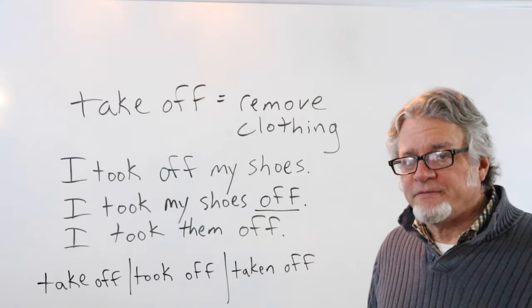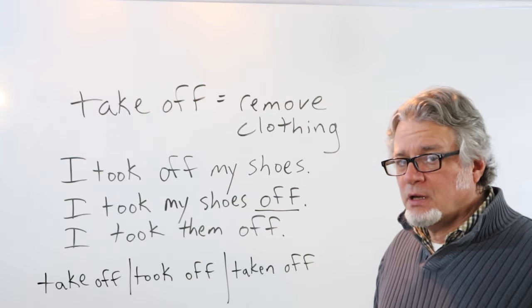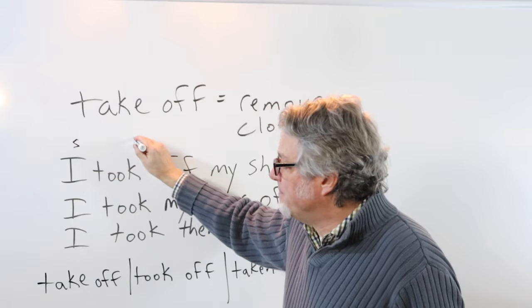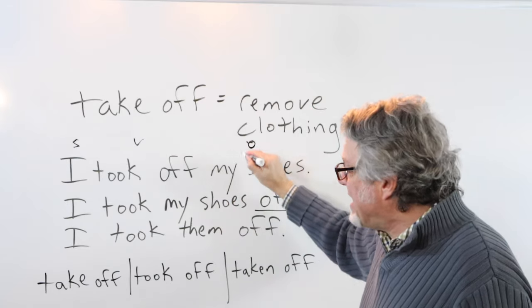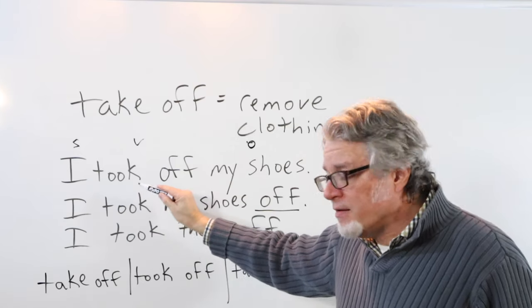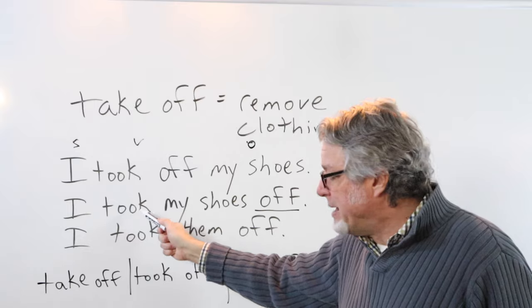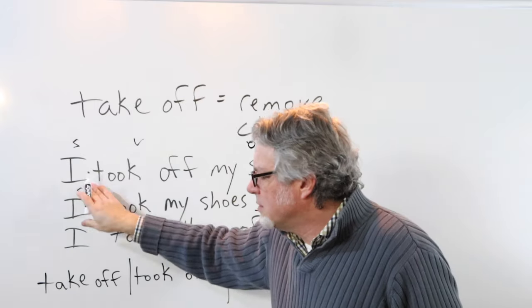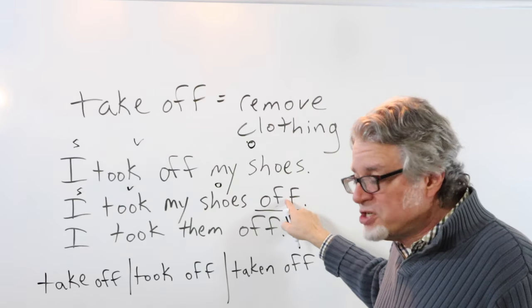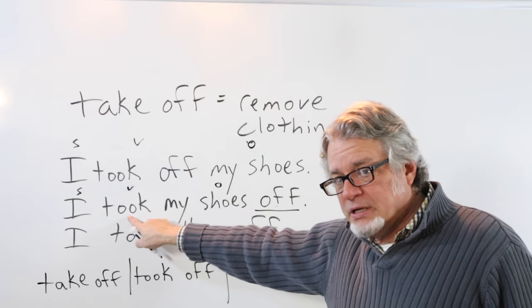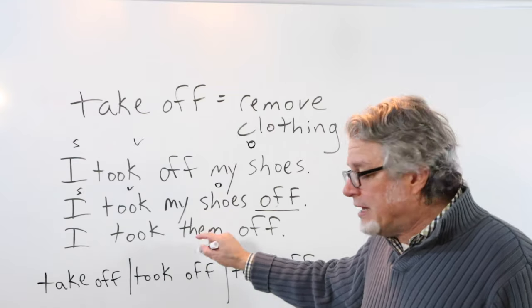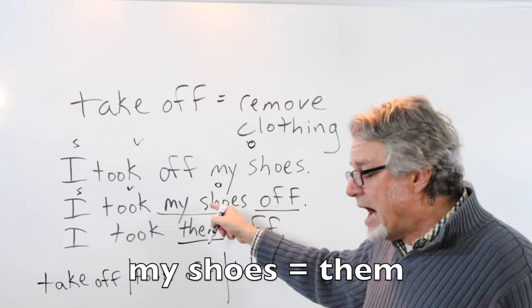You can use take off for removing clothing. In this sentence, I took off my shoes. Here's the subject, here's the phrasal verb, and then here's the object. The object can also go between the verb take, here in the past tense, and the preposition off. So here's the subject, here's the verb, here's the object, and this preposition goes with the verb. I took them off. Here's a pronoun that substitutes for the object, my shoes.